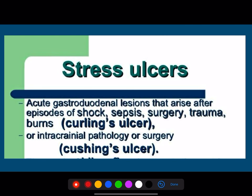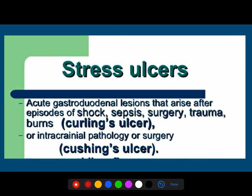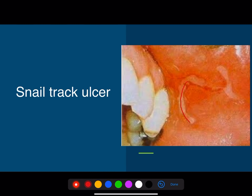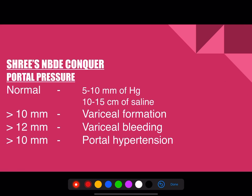Stress ulcers: acute duodenal ulcers arising from episodes of shock, sepsis, surgery, and trauma are called Curling's ulcers. The same stress ulcers occurring in cases of raised intracranial pressure or during intracranial pathologies or surgeries are called Cushing's ulcers. Mucus patches and snail tract ulcers are seen in secondary syphilis.